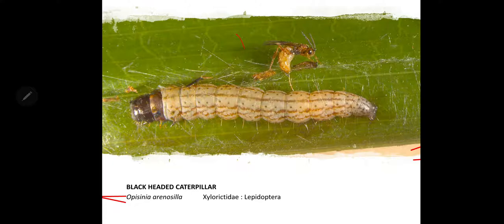The grown-up or final instar larva measures about 15mm long. The larval period lasts 14 days, and the larvae pupate inside the gallery made on the leaves. Adults emerge after 14 days, and the complete life cycle takes 45 to 65 days.